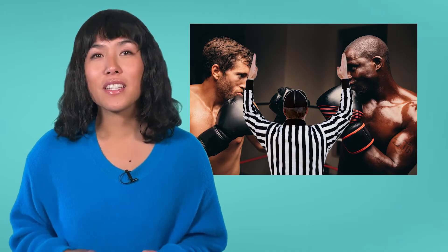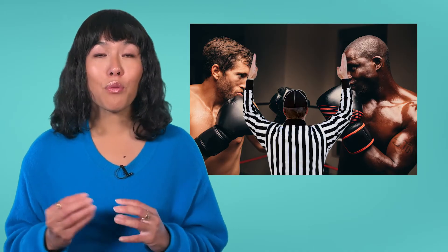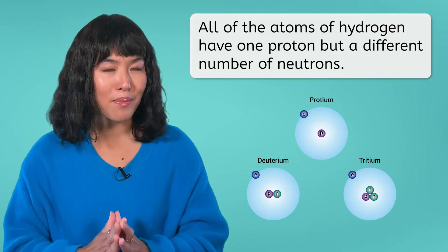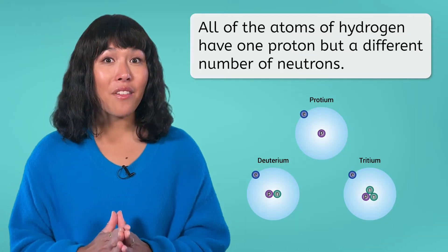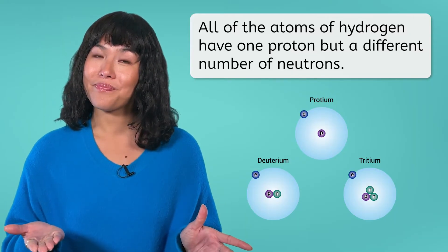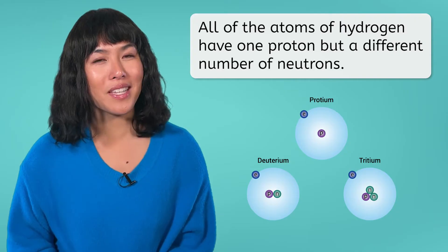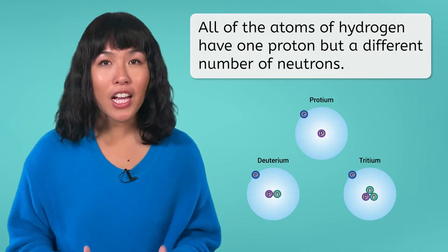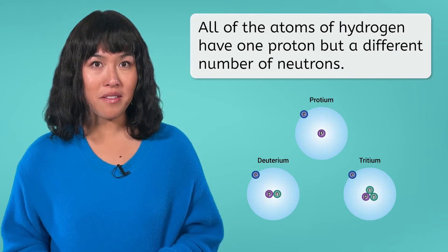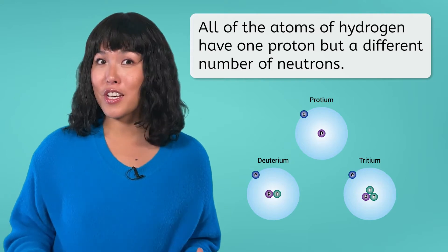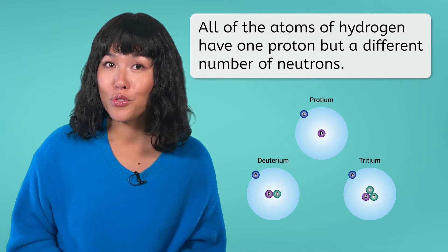One big difference between protons and neutrons is that atoms of the same element can have different numbers of neutrons. For example, all atoms of hydrogen have one proton, but they can have a different number of neutrons.